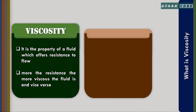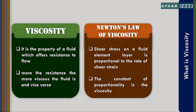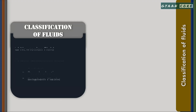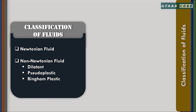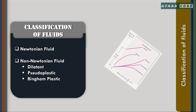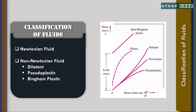Newton's law of viscosity states that the shear stress on a fluid element layer is directly proportional to the rate of shear strain, and the constant of proportionality is called the coefficient of viscosity. Fluids which obey this relation are known as Newtonian fluids, and those which do not obey this linear law are called non-Newtonian fluids. From the graph, the fluid having a linear relationship between the shear stress and the rate of shear strain is the Newtonian fluid. Examples are water, oil, and air.